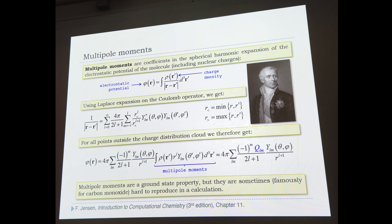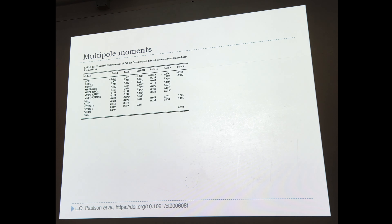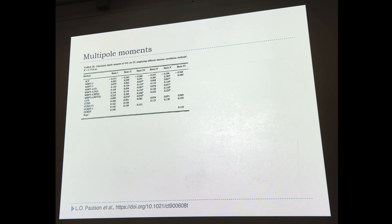They are a ground state property, but interestingly enough, famously hard to reproduce. Even for the simplest molecule, like carbon monoxide, you need to go to a pretty high level of theory. That is our usual gradation: Hartree-Fock is the plain self-consistent field, these are all the perturbation series, and these are the coupled cluster levels, all the way to singles, doubles, and perturbative treatment of triple excitations.